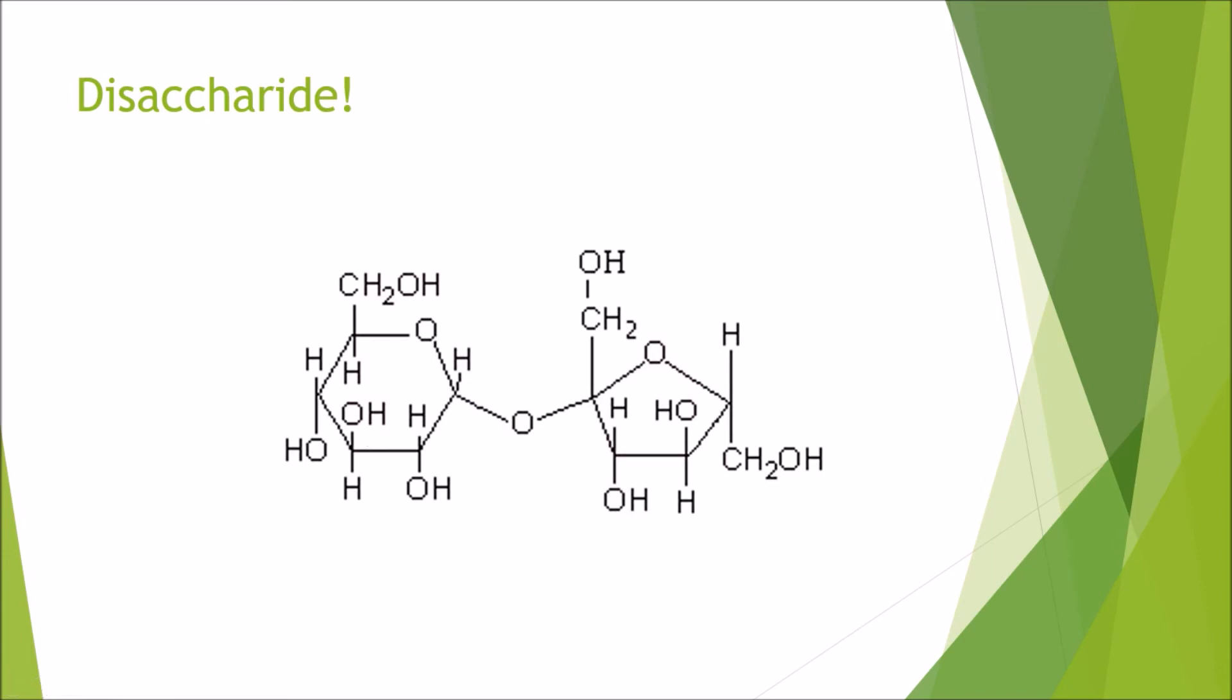And this here is sucrose, which is a combination of fructose and glucose. This is what you have in your sugary sweets. As we can see, we've got glucose here on the left, the hexagon-shaped molecule, and over here we've got fructose, which is the pentagon-shaped molecule.